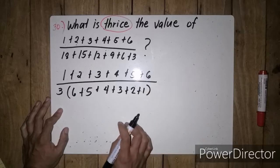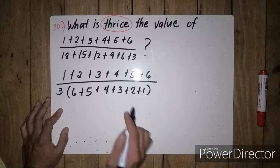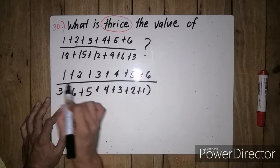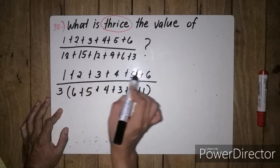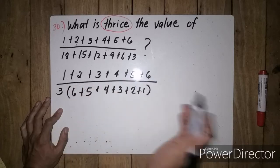Okay, so kung mapapansin ninyo, yung nasa numerator din namin, itong magkamuka. So, 1, 2, 3, 4, 5, 6, 6, 5, 4, 3, 2, 1, nabaligtad lang.